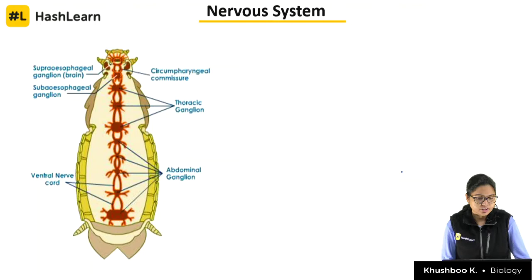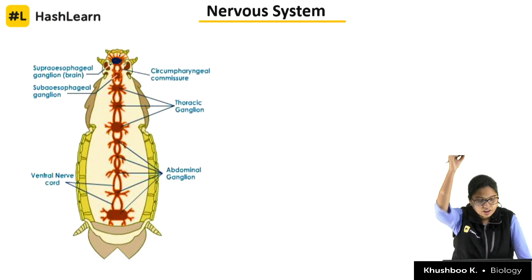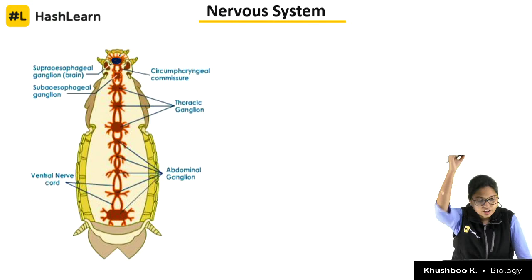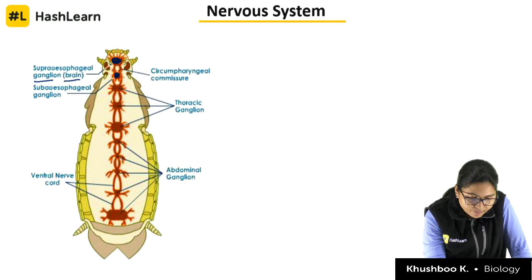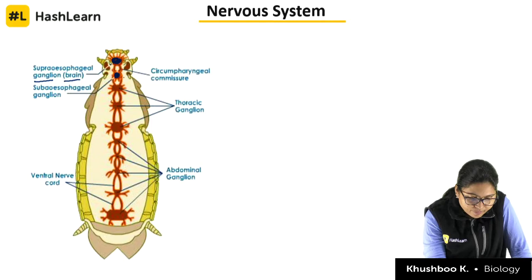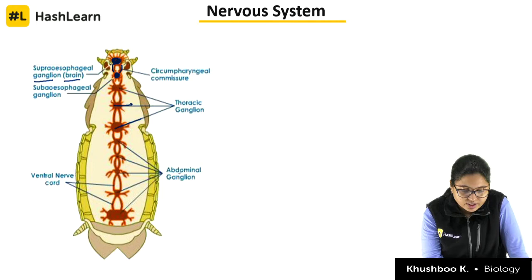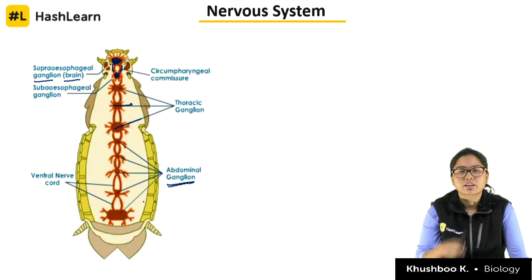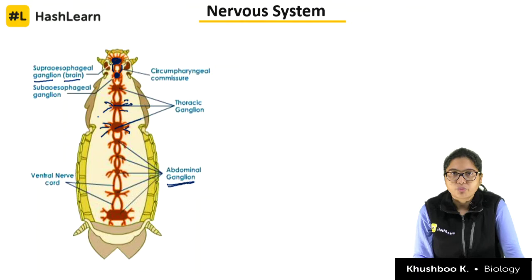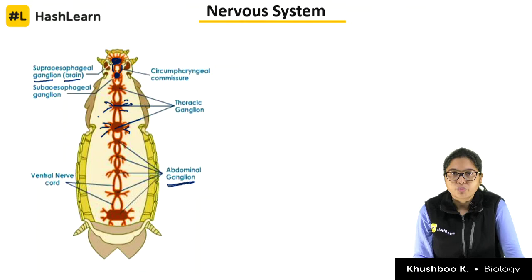Looking at the nervous system diagram: the supraesophageal ganglion is at the top above the esophagus — that is also the brain. Then you have the subesophageal ganglion and the circumesophageal commissures. These are the thoracic ganglia — 3 in thorax — and then 6 abdominal ganglia. This forms the entire central nervous system. Nerves arising from these ganglia innervate all organs of the body, forming the peripheral nervous system.